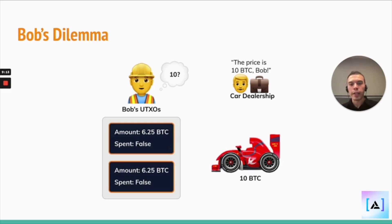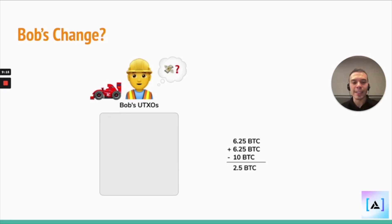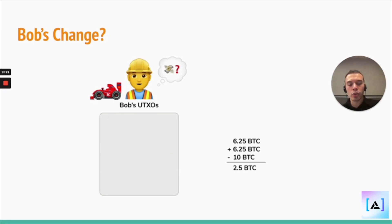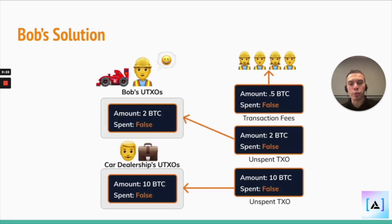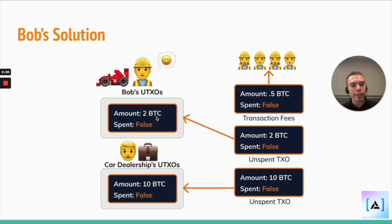So what Bob does is he adds the two UTXOs together and then subtracts what his change would be. And this is the final outcome.